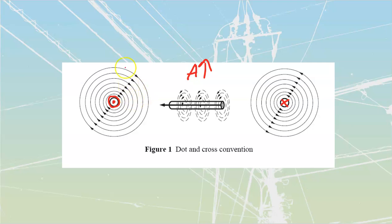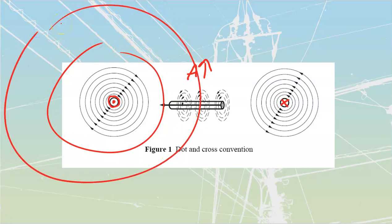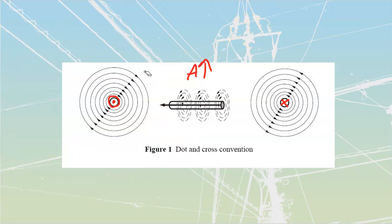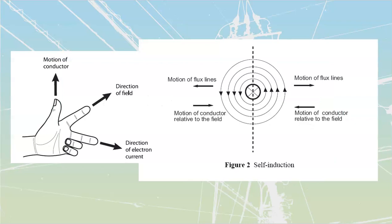Any time we increase the current, these magnetic lines of flux are going to increase, pushing further out. Any time we decrease the amount of current, they're going to collapse back inward — which means they're going to be cutting back into our conductor itself. As soon as they do that, we're going to get this self-induction or self-induced voltage that will generate an opposition inside the conductor that fights back against the change. It's never going to win, but it's always going to resist it.